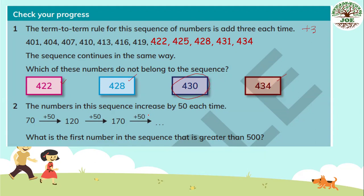Number two: the numbers in this sequence increase by 50 each time; the term-to-term rule is add 50. So we have 70, 120, 170. The first number in the sequence greater than 500 — let's write some more terms: 170 plus 50 is 220, then 270. All terms end in 70 or 20, so the first term greater than 500 is 520.